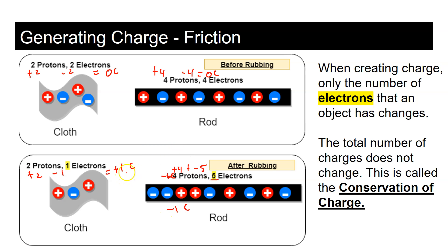Now each object has a net charge — one positive, one negative. But notice the total number of protons and electrons in the system did not change. Originally we had two protons and two electrons in the cloth, and four protons and four electrons in the rod — a total of six protons and six electrons in the system.